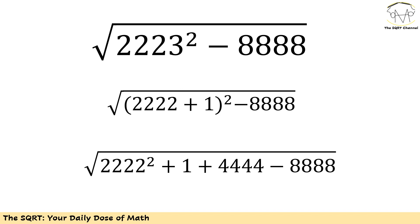The first one is going to be 2222². The second one is easy, I'm going to write it as 1. And then I have two times the first value and the second value, so it's going to be 4444.